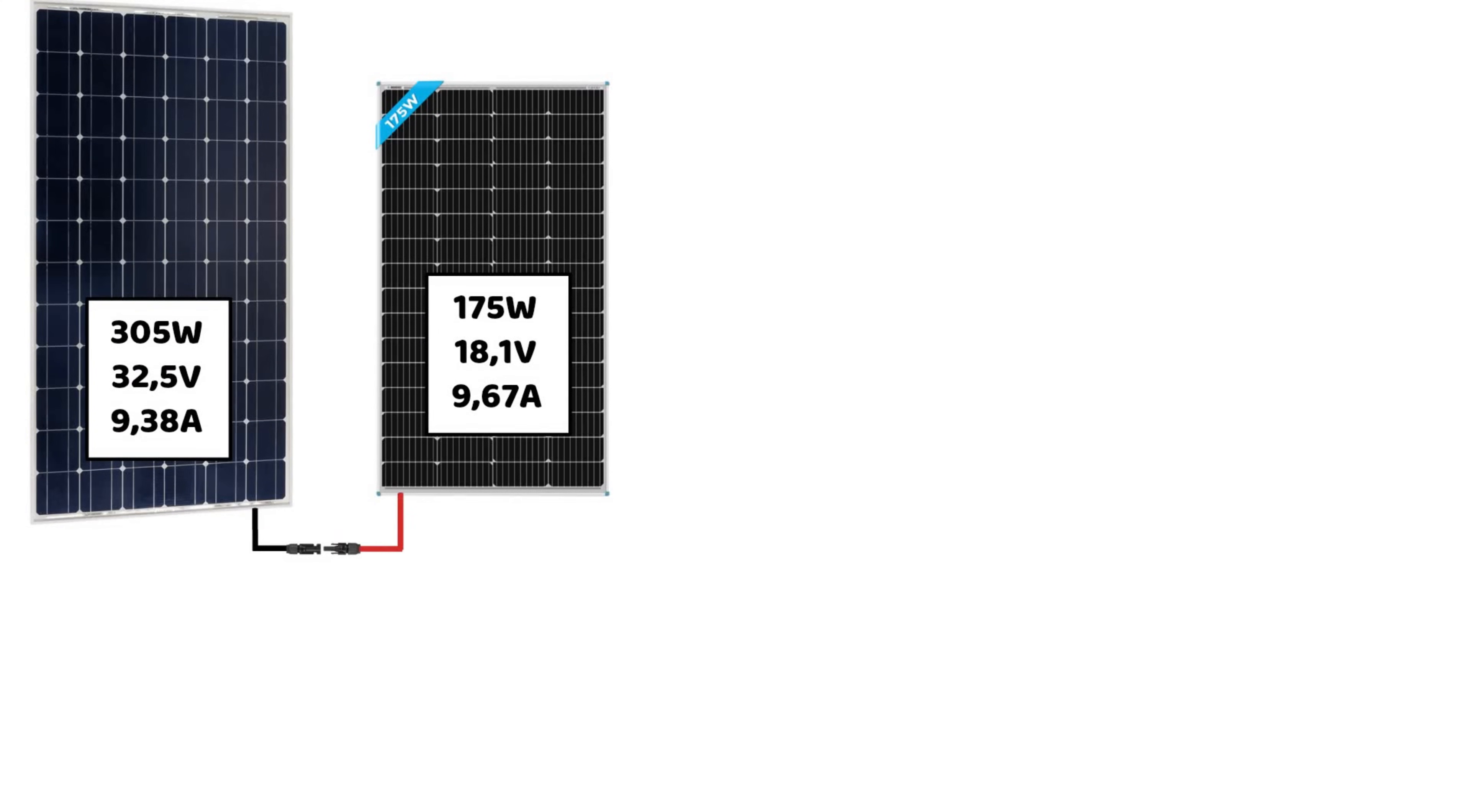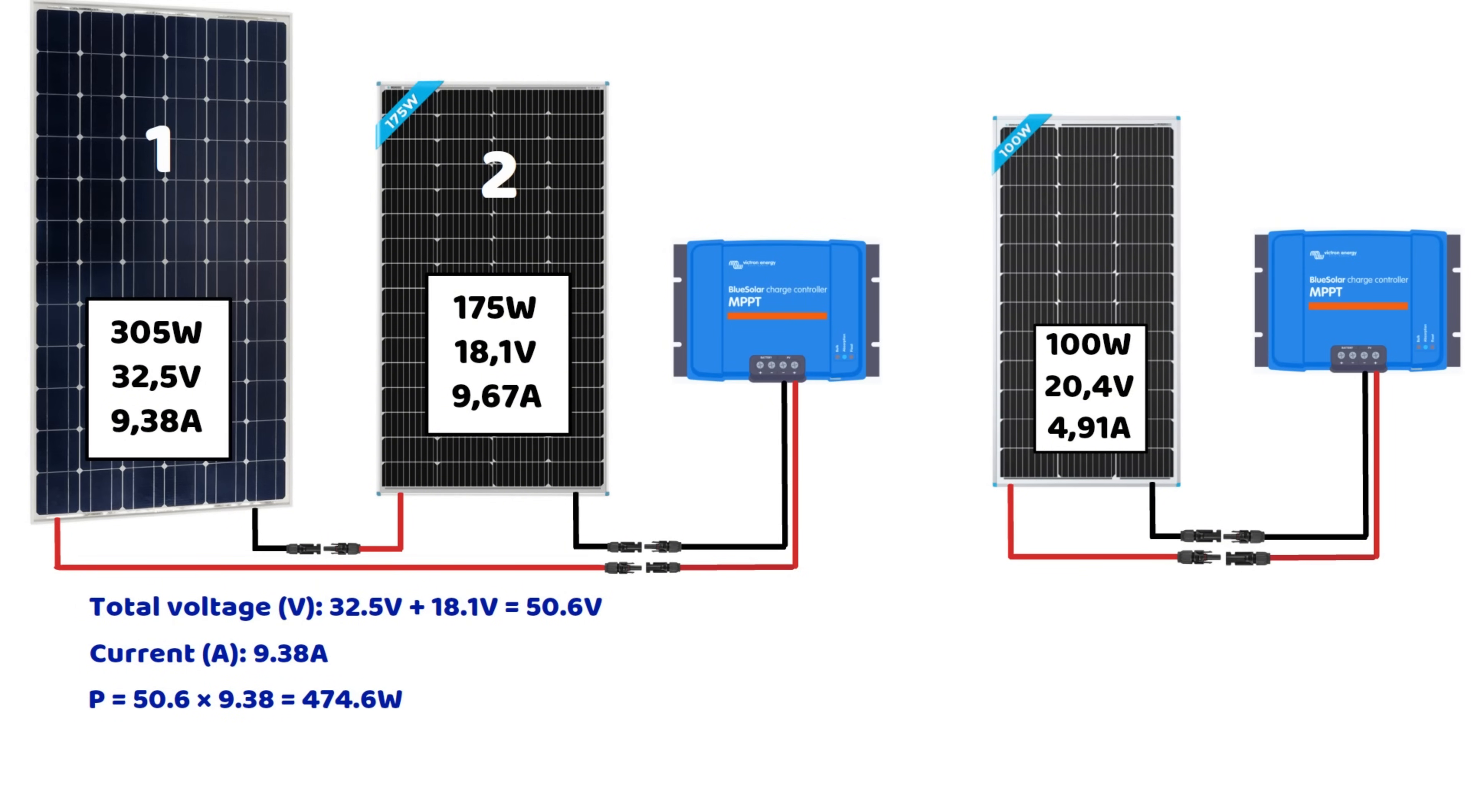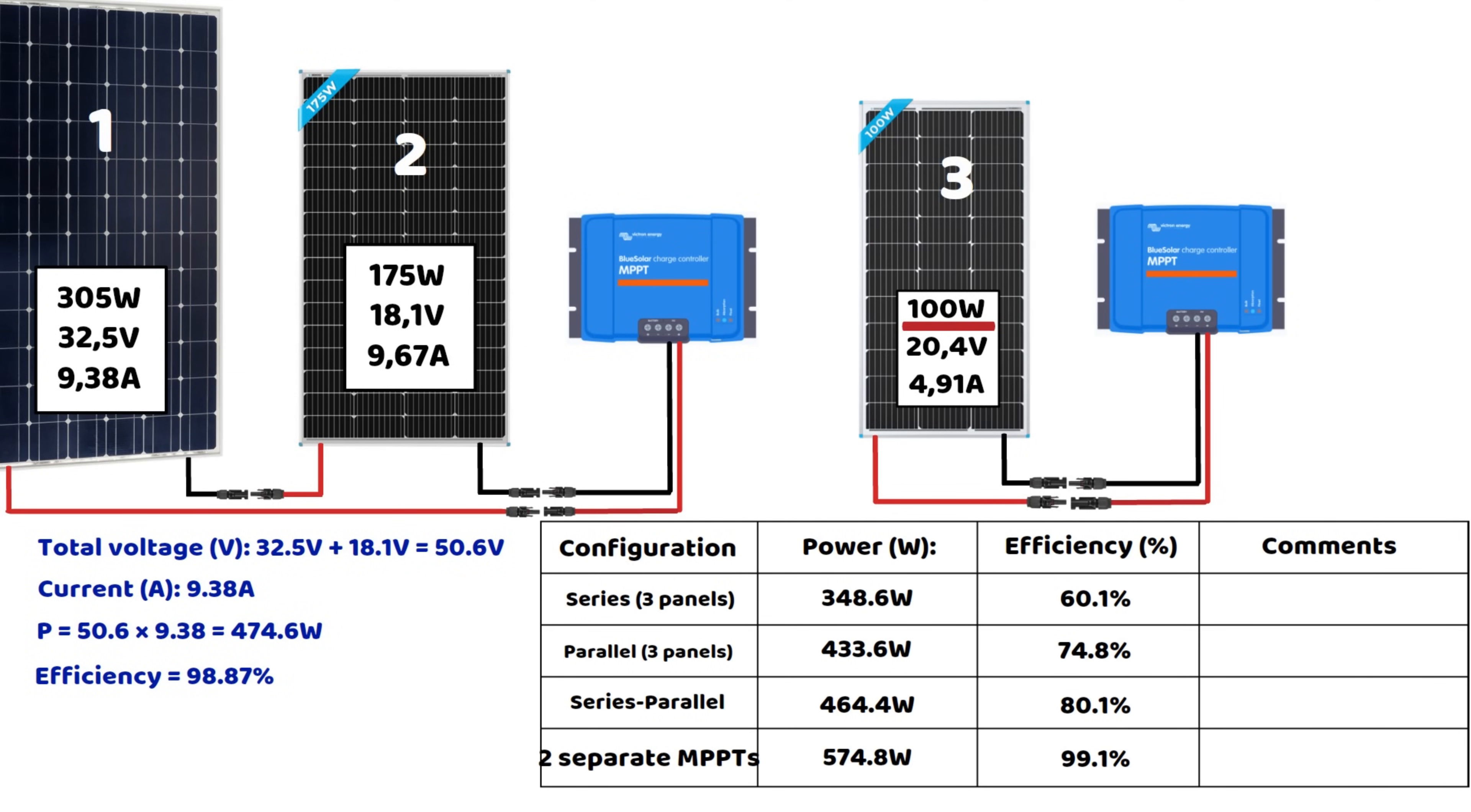For this type of scenario, using two separate MPPT controllers is often the best solution when dealing with panels that have very different specifications. Here's a better configuration, again with two groups. An MPPT controller connected to panels 1 and 2 in series. This gives us a total voltage of 50.6 volts, a current of 9.38 amps, and a total power of 474.6 watts, which corresponds to an efficiency of 98.87%, virtually no loss. An MPPT controller connected exclusively to panel 3. Here, it will deliver its 100 watts. No loss, thus optimal efficiency. In this table, you can see a summary of all the connection variants we've tried and the most efficient one.